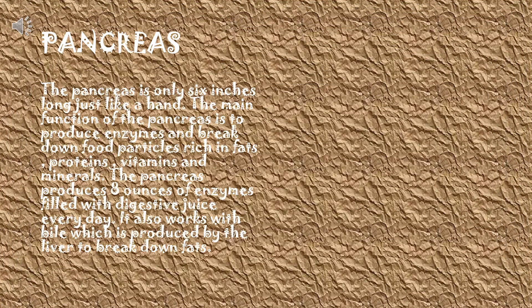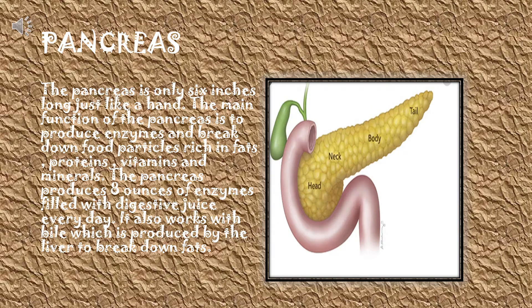Pancreas. The pancreas is only 6 inches long, just like a hand. Its main function is to produce enzymes and break down food particles rich in fats, proteins, vitamins, and minerals. The pancreas produces 8 ounces of enzyme-filled digestive juices every day. It also works with bile produced by the liver to break down fats.